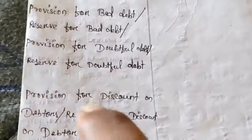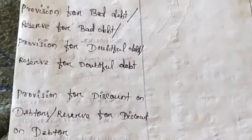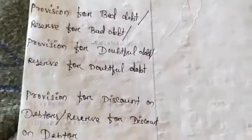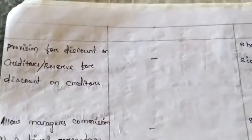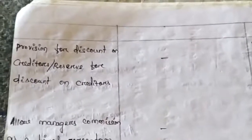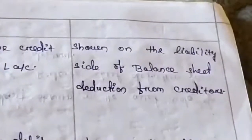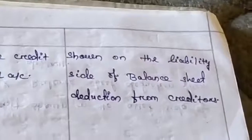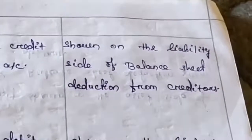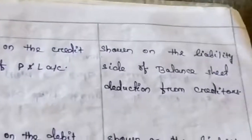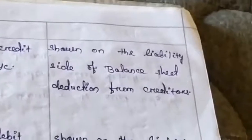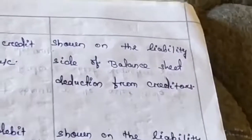An exclusive video will be made for provision for bad debt, provision for doubtful debt, provision for discount on debtors, and provision for discount on creditors. Provision for discount on creditors is treated in the opposite way: shown on the credit side of the profit and loss account, and shown on the liability side of the balance sheet by way of deduction from creditors.